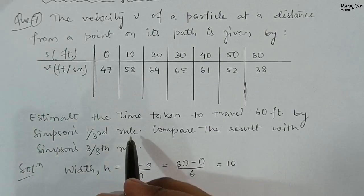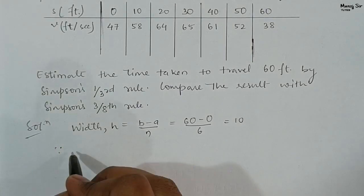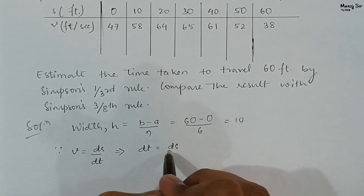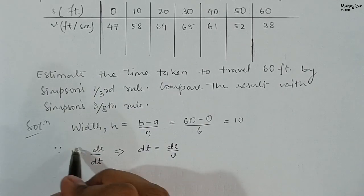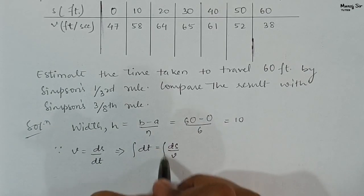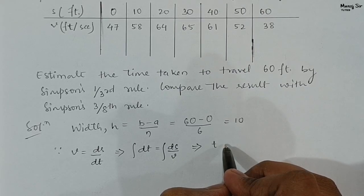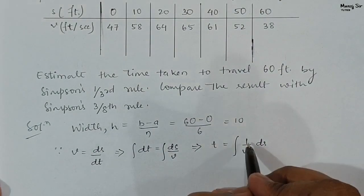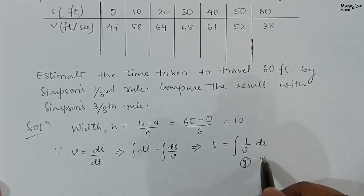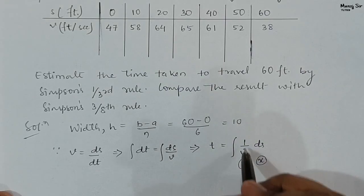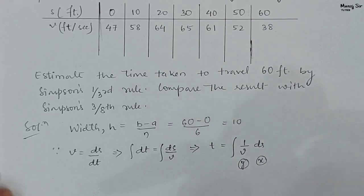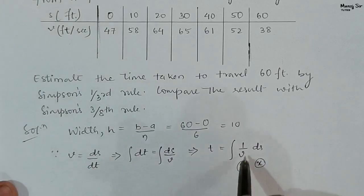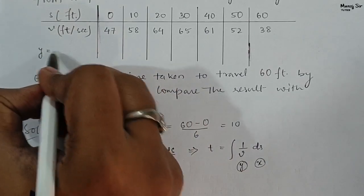Now we need to find the time. Since we know that velocity v = ds/dt, this implies dt = ds/v. Integrating both sides, time t equals the integral of (1/v) ds. So here y = 1/v and x = s (distance). We want to compute 1/v for each velocity value given in the problem.